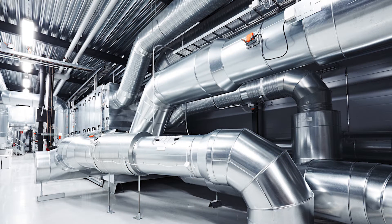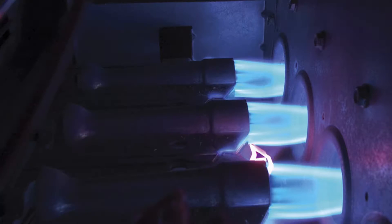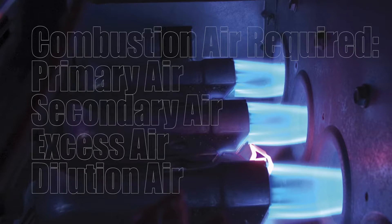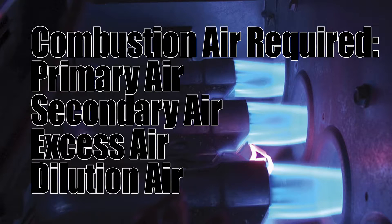The air supply we're going to refer to is the air used for gas appliances to burn. It includes primary air, secondary air, excess air, and dilution air. This is only for category one natural draft appliances.